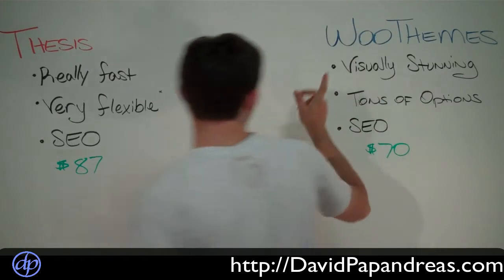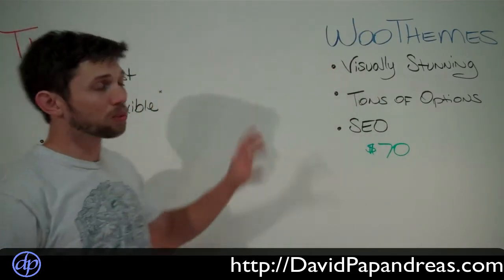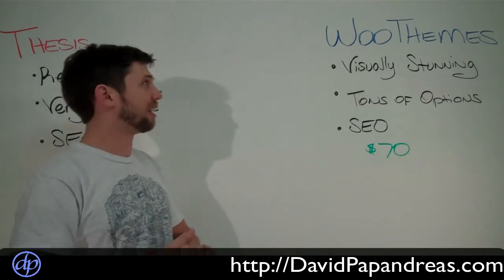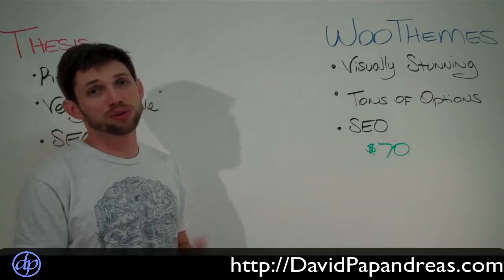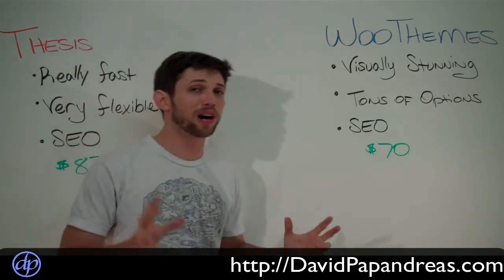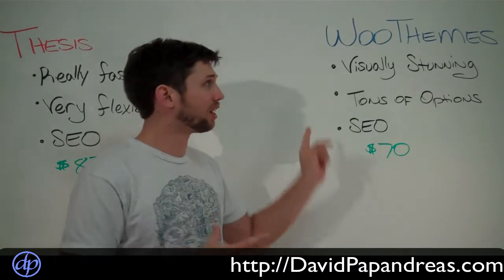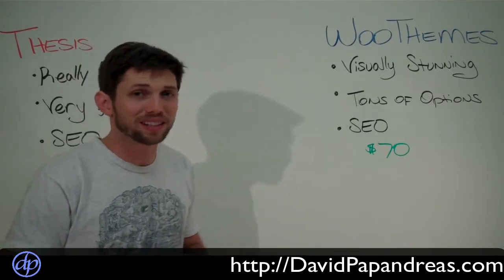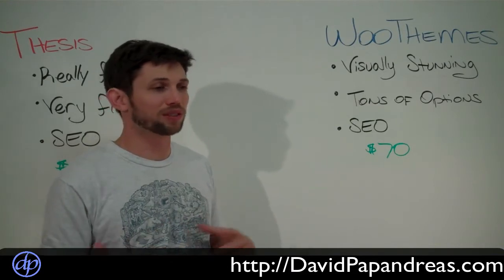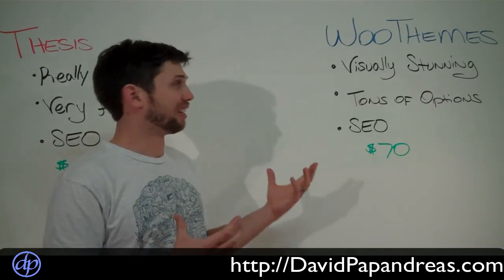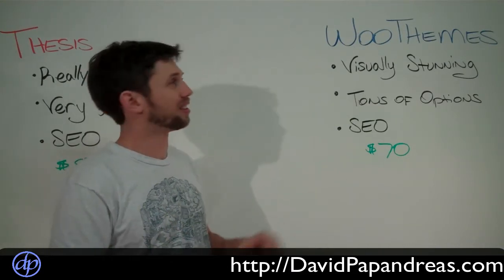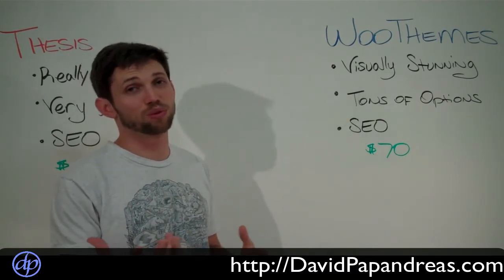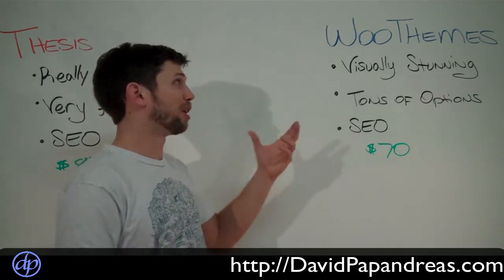Over here we have WooThemes, and this is the one I just switched over to and I'm really liking it a lot. First off, they're visually stunning sites right out of the box. As soon as you get a WooTheme, it's ready to go. You can customize it with custom colors or fonts, but it's real quick and simple to manipulate the theme. Just right out of the box, it looks beautiful and is ready to go.